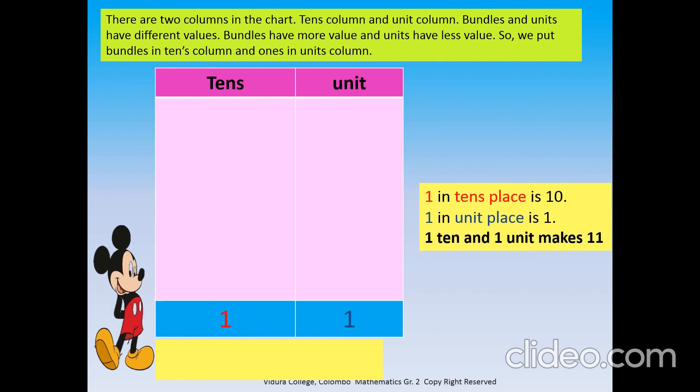Look at the chart. There are two columns in the chart: tens column and unit column. Bundles and units have different values. Bundles have more value and units have less value. So we put bundles with ten straws into tens column and ones in units column.